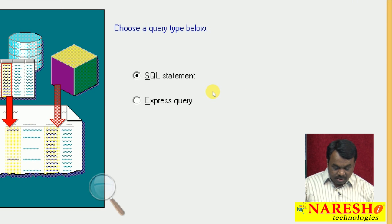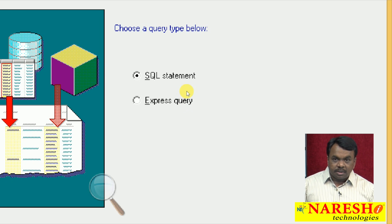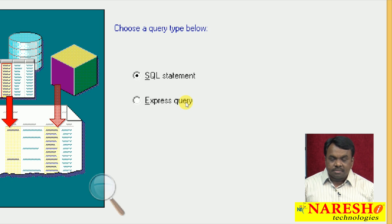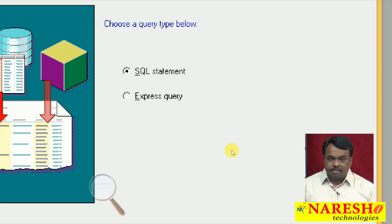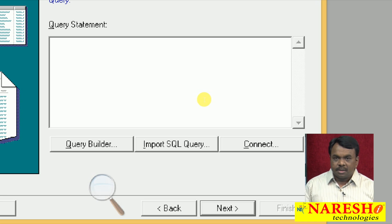I select tabular and click Next. It is asking for a SQL statement. You have to write a query to get the data from the database table. There are two options: SQL statement or express query. If the data is in a relational database table, select SQL statement; if the data is in a cube like an MDB (multi-dimensional database), select express query. I am selecting SQL statement and clicking Next. Now enter the query.